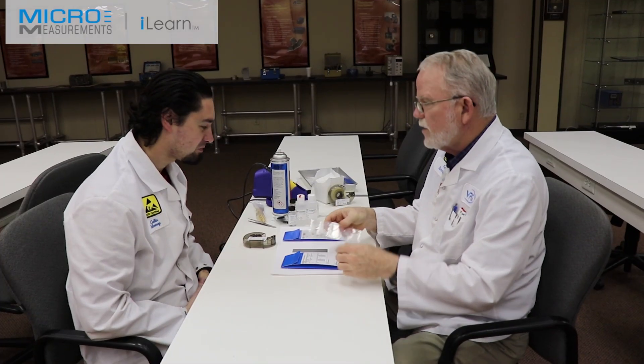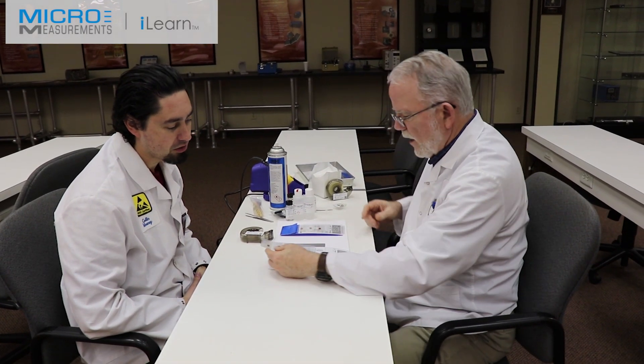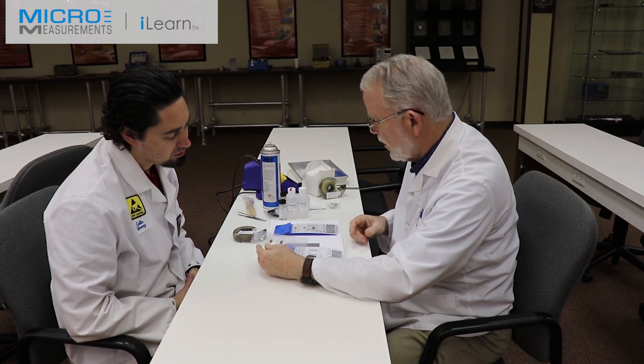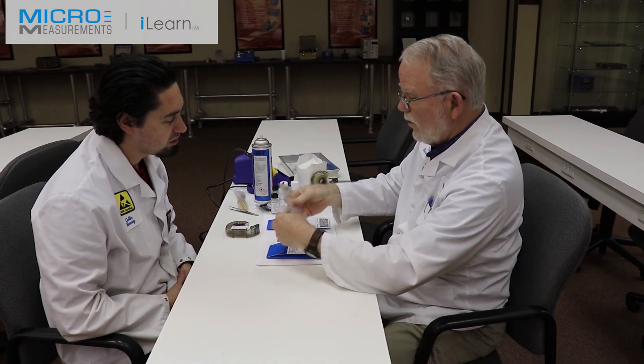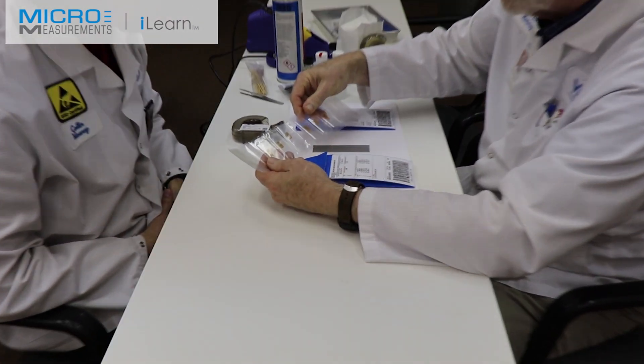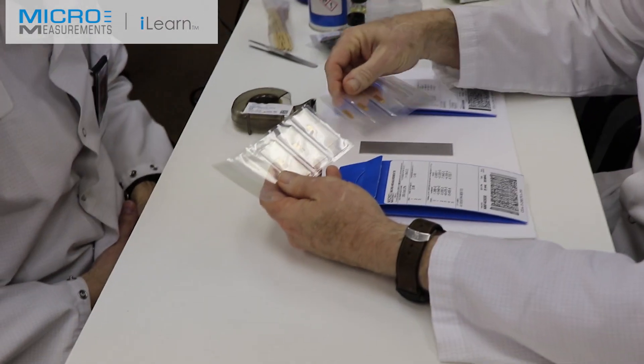Have you seen this new product we got? It's a CEA series gauge made with advanced sensor technology. What's the difference? Well, look at this. You can hardly tell visually. If you look really close, you might be able to see it under a microscope, but essentially they are identical.